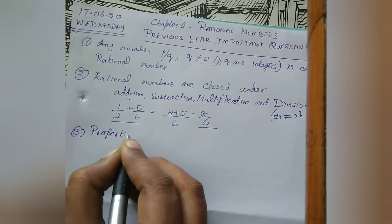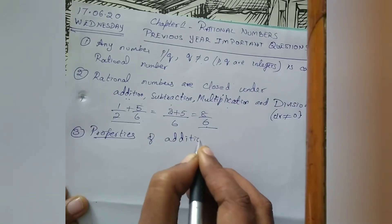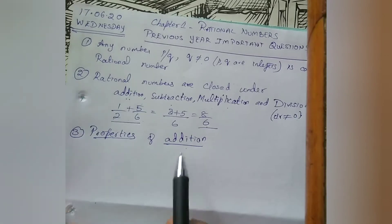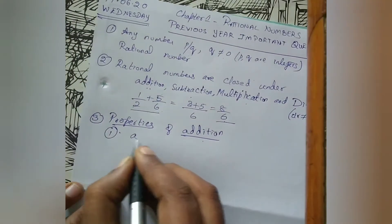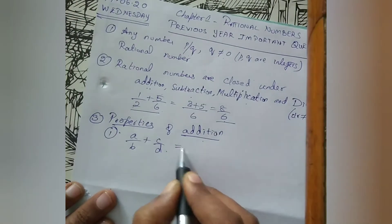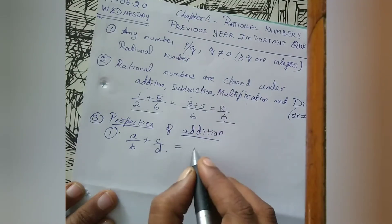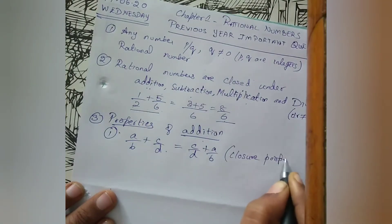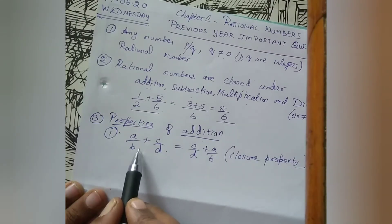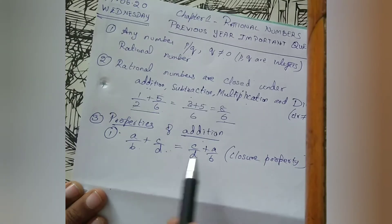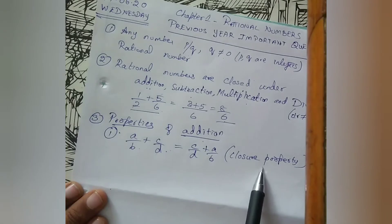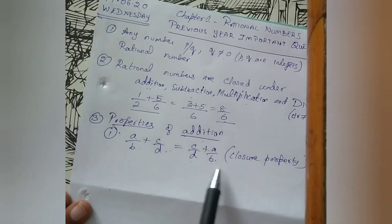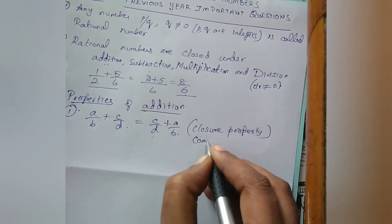Now, under addition, the first property is the closure property — when you add two rational numbers, the result is also a rational number. The second property is the commutative property: when you change the position of two rational numbers being added, you get the same result. That is, a/b + c/d = c/d + a/b. So rational numbers are commutative under addition.